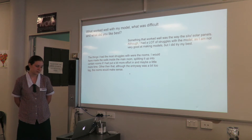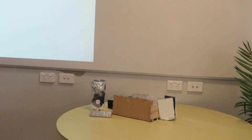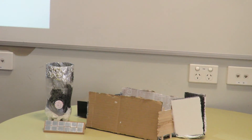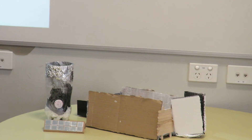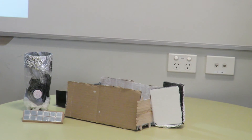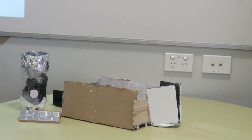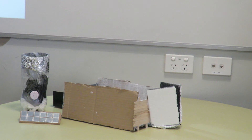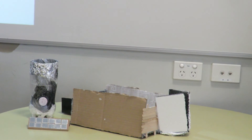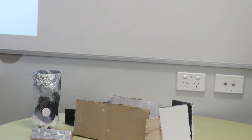What worked well with my model? Was it difficult and what did I address? Something that worked well was the way the solar panels worked out. Although I did have a lot of struggles with the model, as I am not very good at making models, I did try my best. The things I had the most struggles with were the rooms — I could have made more walls inside the main rooms if I had put a bit more effort in and maybe a little more time. Other than that, although the entryway was a bit too big, the rooms would make sense.